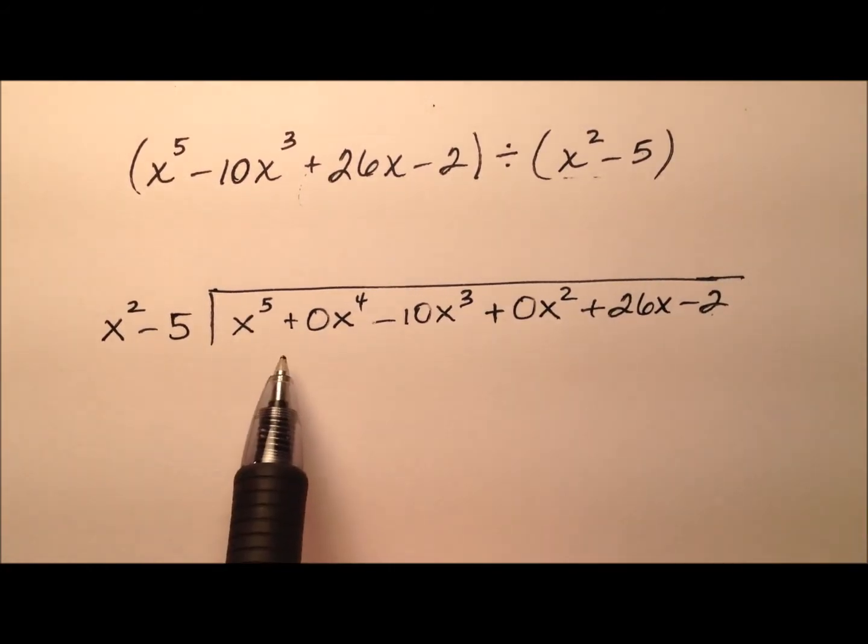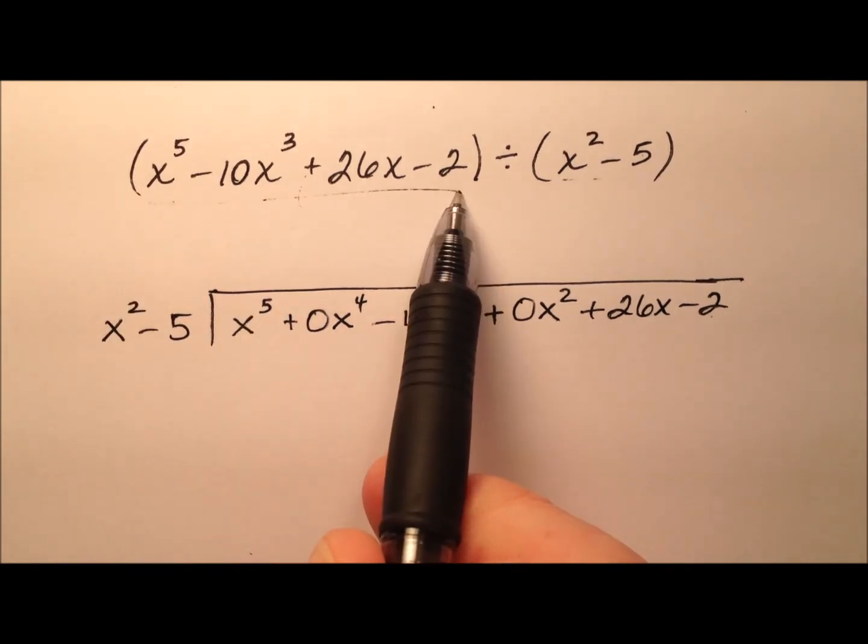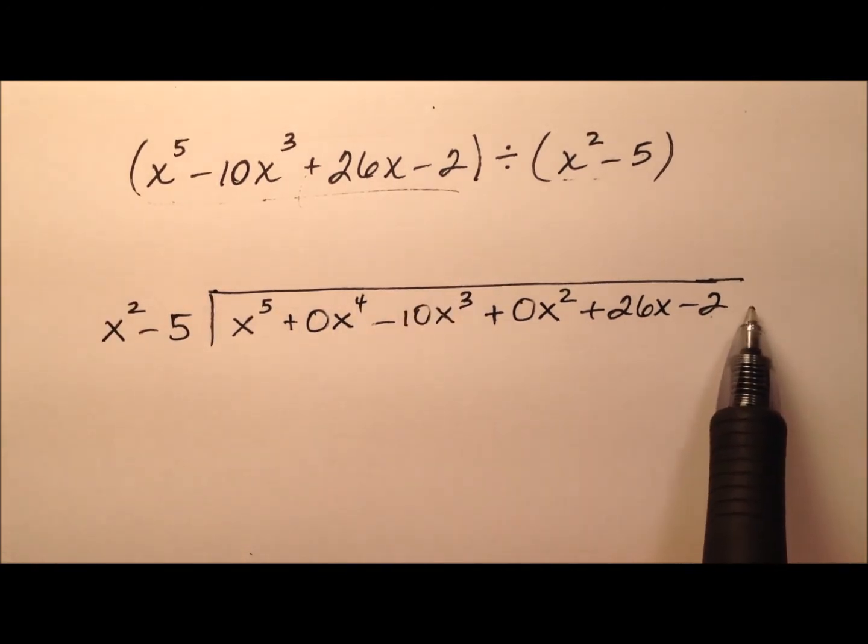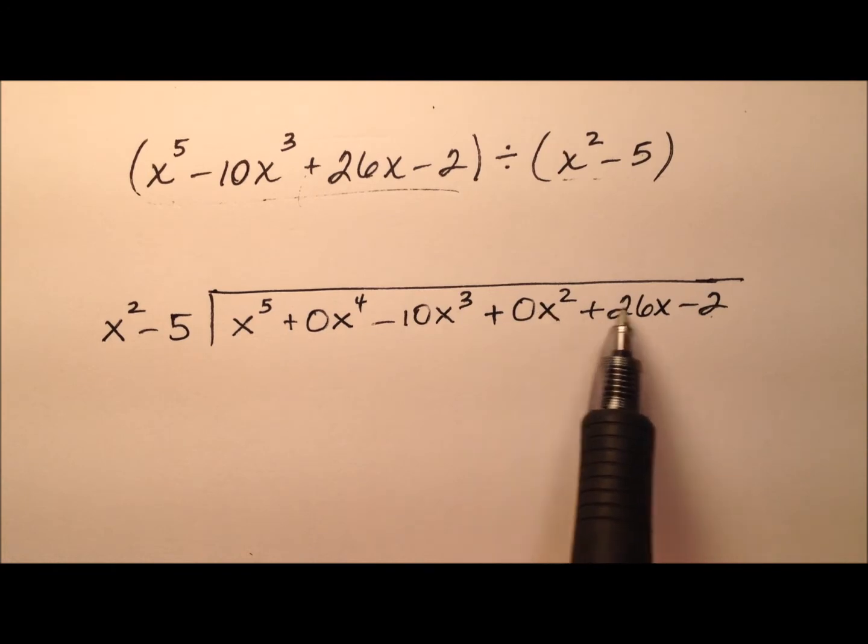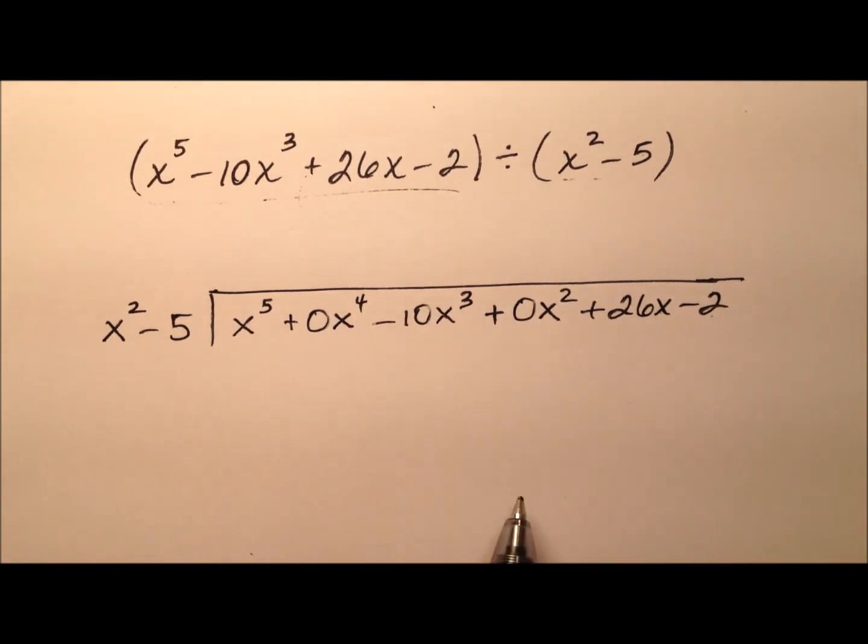Okay so the big thing here is that when you're writing this polynomial for this long division algorithm you have to have a place for every single power: 5, 4, 3, 2, 1, and the constant, even if those terms don't show up in the original polynomial.